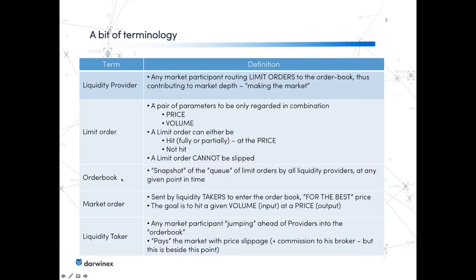We're going to start from the market creators — the liquidity providers — all the way down to liquidity takers, which would be you as an individual customer of DarwinX. Who's a liquidity provider or a market maker? Well, in its strictest sense, it's any market participant that routes limit orders to an order book and thus creates market depth. This is what's called making the market.